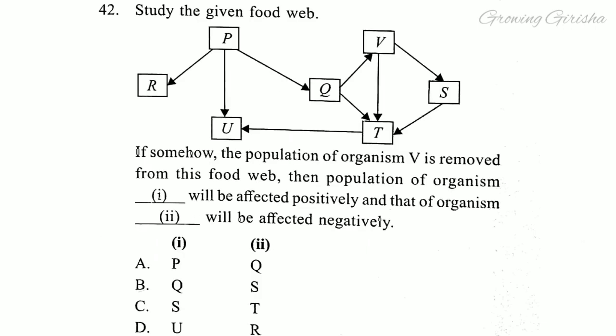Question 42. Study the given food web. If somehow the population of organism V is removed from this food web, then population of organism dash will be affected positively and that of organism dash will be affected negatively. Answer is option B: Q and S.